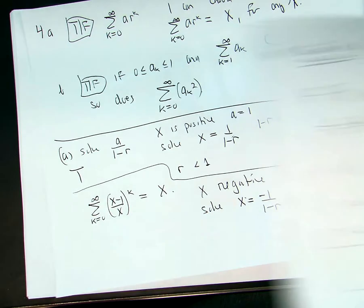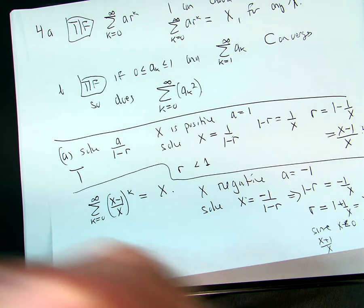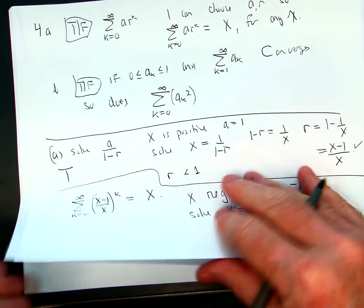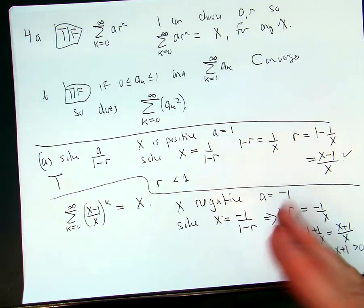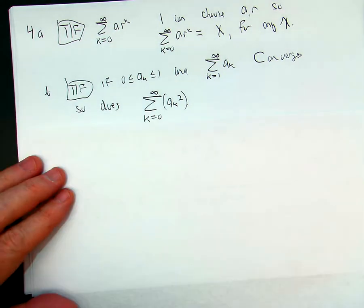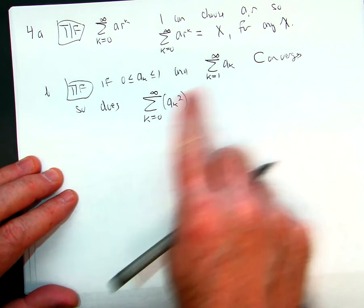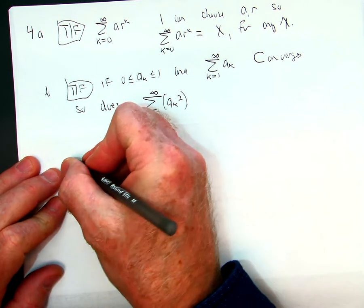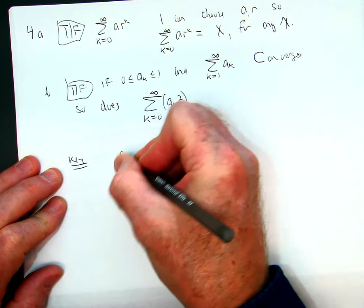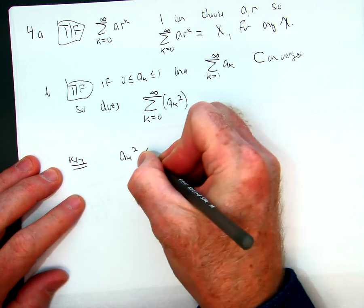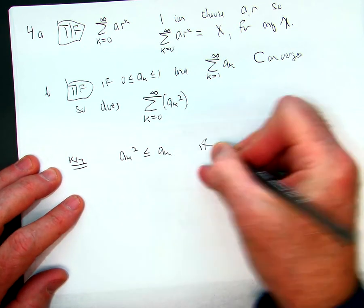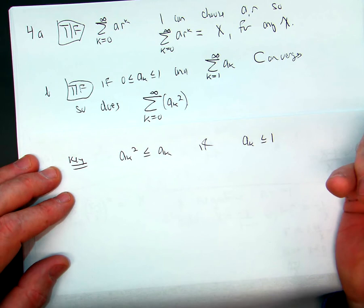Okay, now the next one is b right here. So let me get a piece of paper. If this converges, that if this is true and ak converges, and so does this, here's the key idea: that ak squared is less than ak if ak is less than or equal to one, because you're making the number smaller.